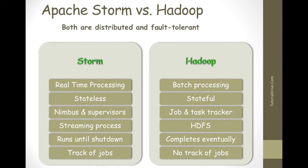Hadoop and Storm are frameworks used to analyze big data. Both are complements to each other but differ in a few aspects. Apache Storm does all operations except persistency — it won't store any data. On the other hand, Hadoop is good at everything but lacks when it comes to real-time computation.